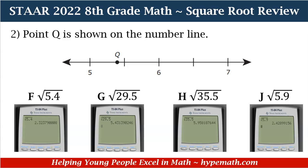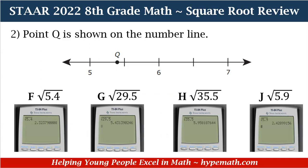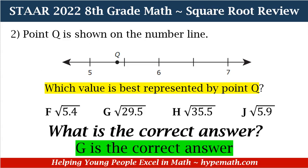Since we know F and J are wrong, let's focus on G and H. The square root of 29.5 is 5 and 43 hundredths. The square root of 35.5 is 5 and 96 hundredths. Looking at our calculator displays, our correct answer is G — the square root of 29.5 — because the answer is 5 and 43 hundredths. That's how you solve these types of problems.